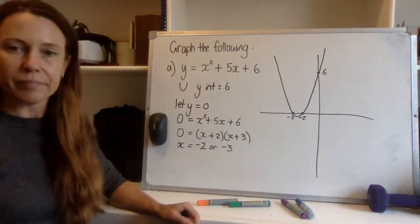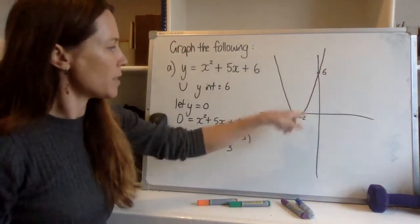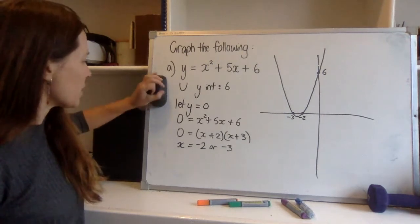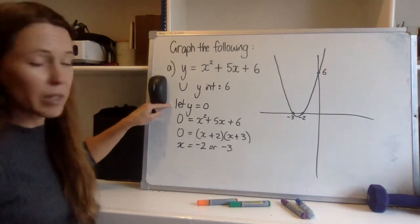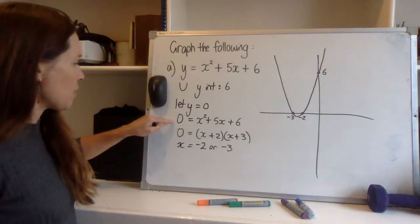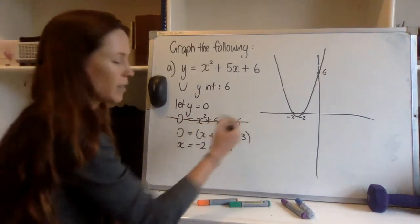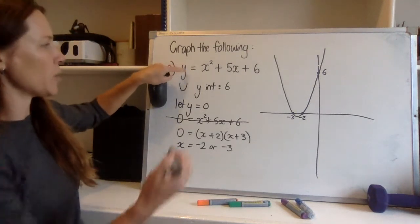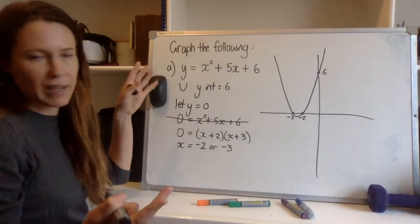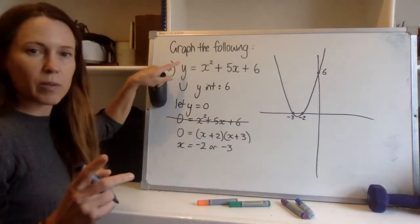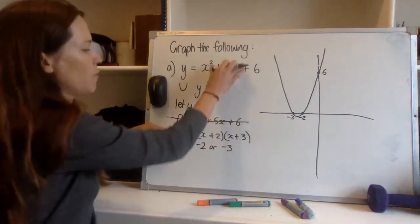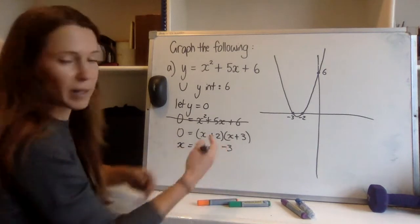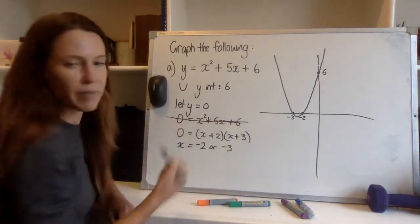So I can go ahead and graph those. Negative two and negative three — that's where my parabola cuts through, and I've already reasoned that it's upright, so I can graph it. It's going to look something like this. It's got intercepts, it's got a basic shape — it's a pretty good graph. Writing that I'm letting y equal zero is not a bad idea, but writing out that whole substituted line was a little unnecessary. I can save time by jumping straight to factorizing.